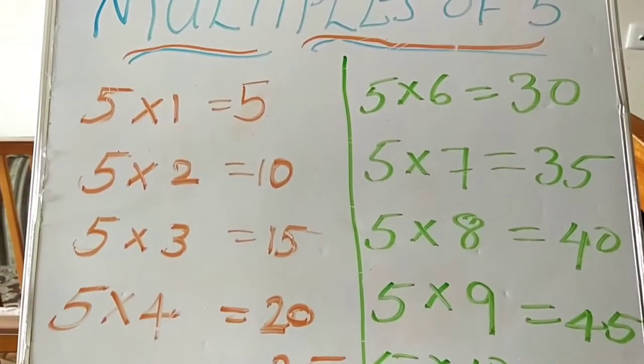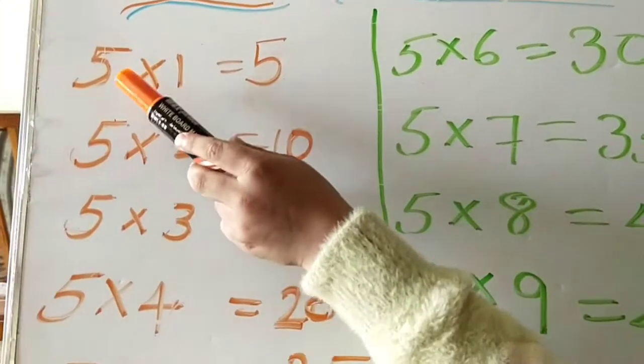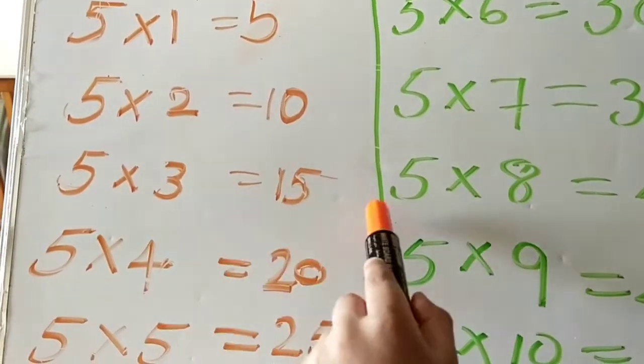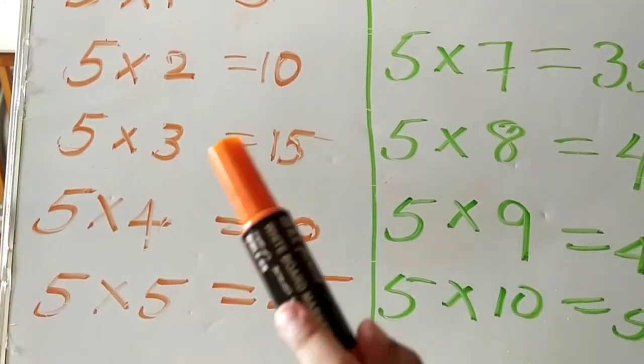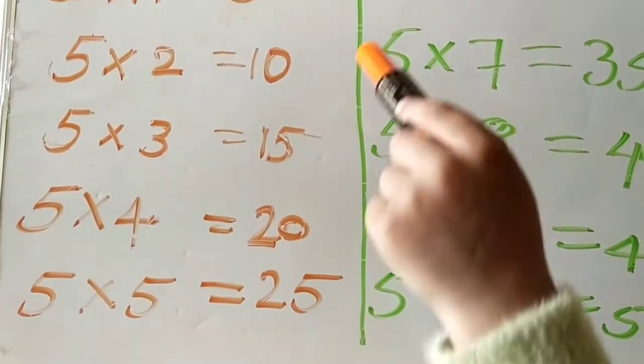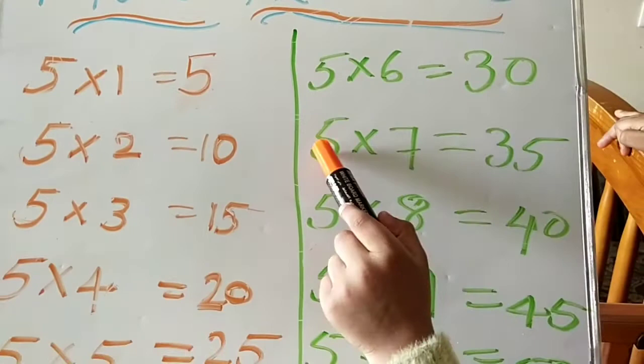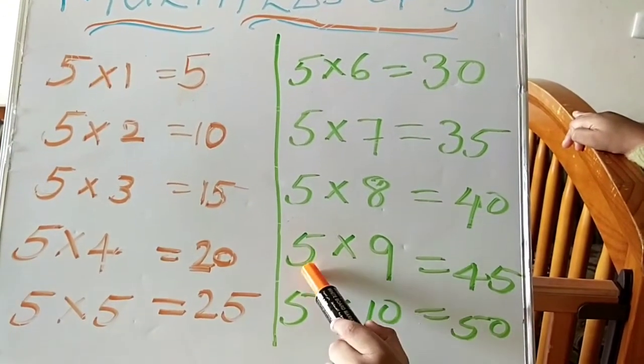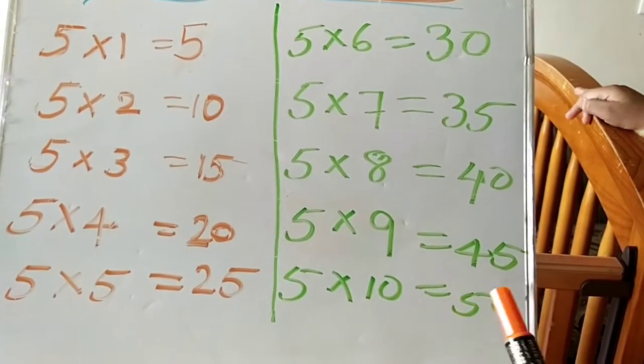Great job, let's just start one more time. 5 1s are 5, 5 2s are 10, 5 3s are 50, 5 4s are 20, 5 5s are 25, 5 6s are 30, 5 7s are 35, 5 8s are 40, 5 9s are 45, 5 10s are 50.